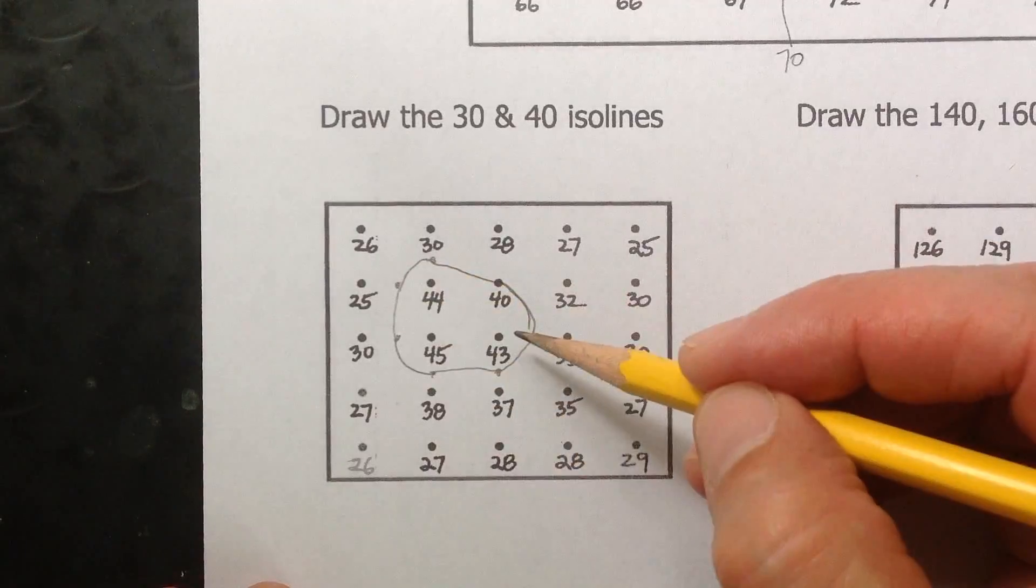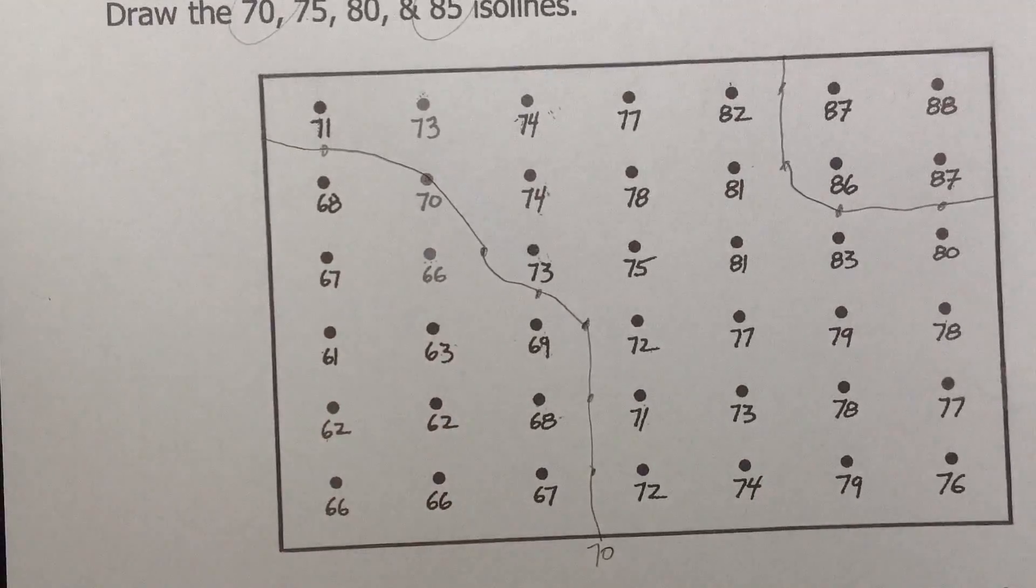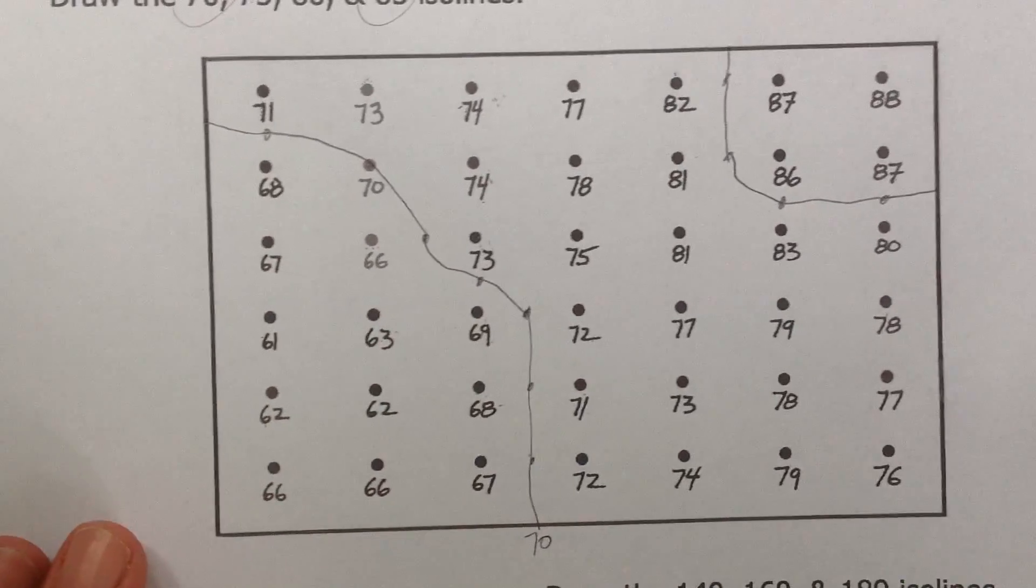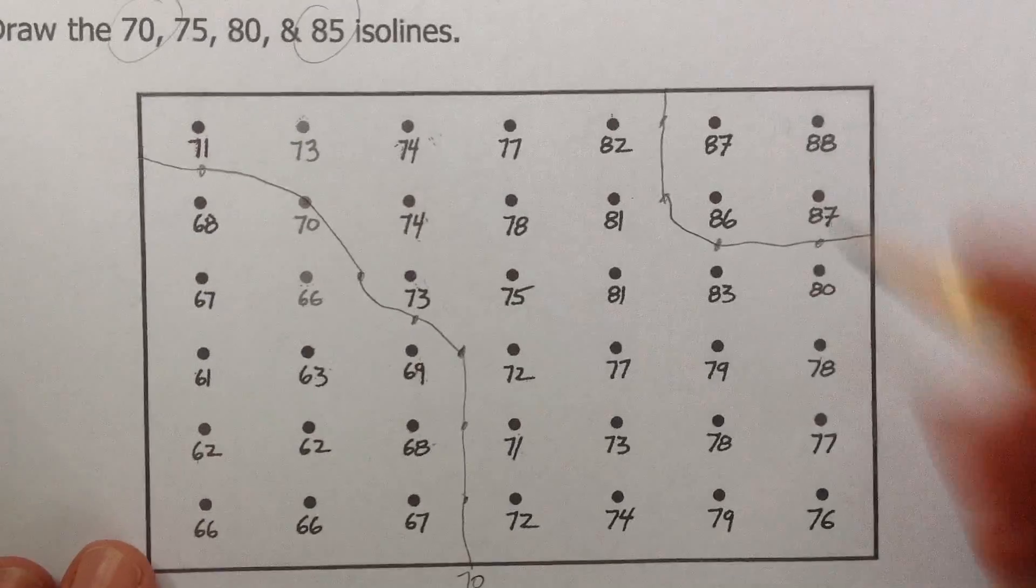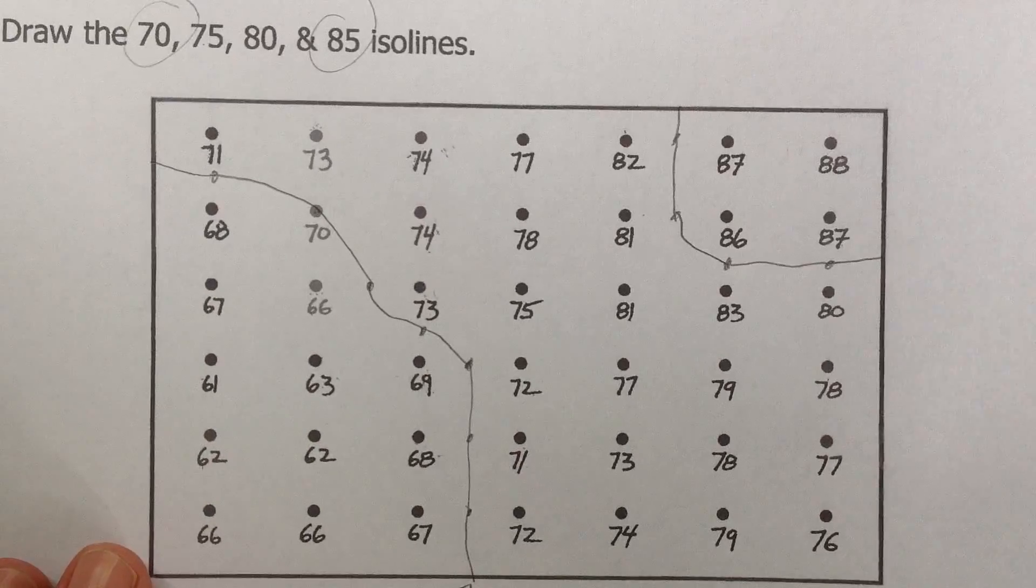So sometimes you have to connect them. And sometimes you go off the map here. You'll get the sense of it from doing a lot of practice. Just know all these lines do connect. This line will connect somewhere. It's just usually off the map somewhere. So that's the little intro to drawing isolines.